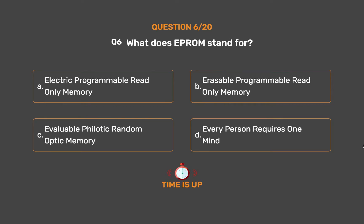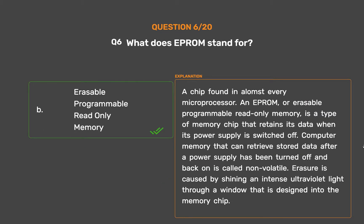The correct answer is Option B: Erasable Programmable Read-Only Memory. A chip found in almost every microprocessor, an EEPROM is a type of memory chip that retains its data when its power supply is switched off. Computer memory that can retrieve stored data after a power supply has been turned off and back on is called non-volatile. Erasure is caused by shining an intense ultraviolet light through a window designed into the memory chip.